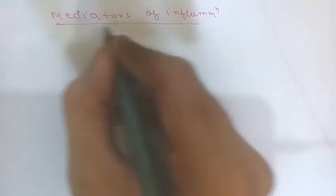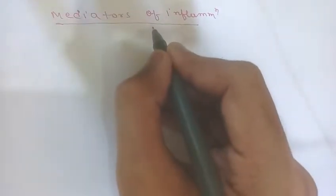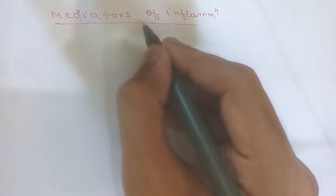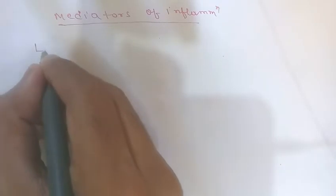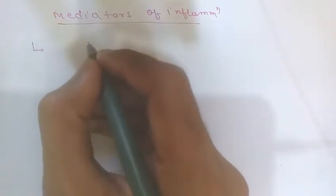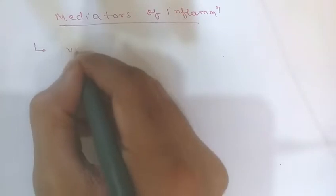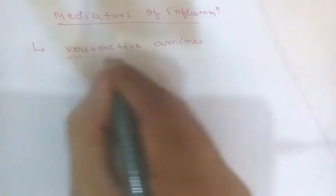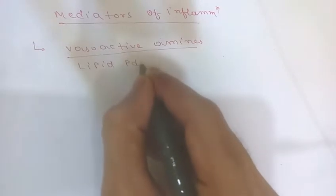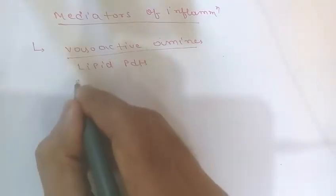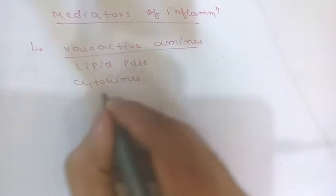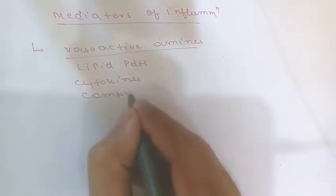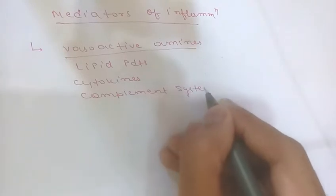In this video we are going to start with the mediators of inflammation. Mediators of inflammation are the substances that initiate and regulate inflammatory reactions. The most important mediators of acute inflammation are vasoactive amines — histamine and serotonin — lipid products such as prostaglandins and leukotrienes, cytokines, and products of the complement system.